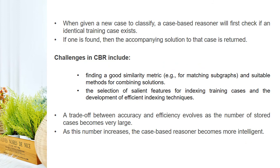When given a new case to classify, a case-based reasoner first checks if an identical training case exists. If one is found, the accompanying solution to that case is returned. Challenges in CBR include finding a good similarity metric — for example, for matching sub-graphs — and suitable methods for combining solutions. Another challenge is the selection of salient features for indexing training cases and the development of efficient indexing techniques. A trade-off between accuracy and efficiency evolves as the number of stored cases becomes very large; as this number increases, the case-based reasoner becomes more intelligent.